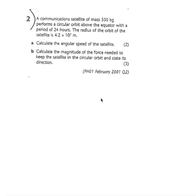Final exemplar on these introductory questions. The mass of the communication satellite is 550 kilograms. The period of the circular orbit is 24 hours, and we need to convert that into seconds: 24 times 60 minutes per hour times 60 seconds per minute, which gives 8.64 times 10 to the 4 seconds.